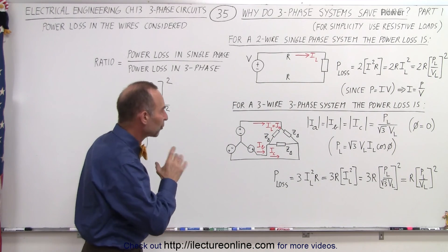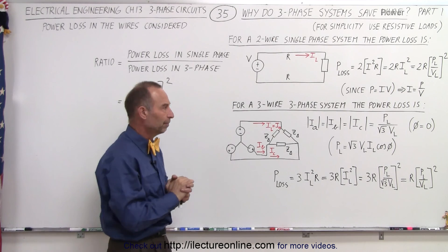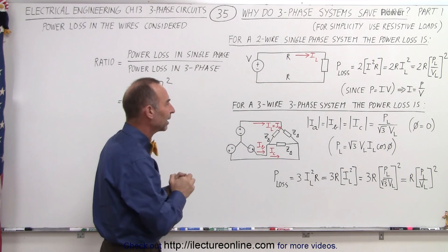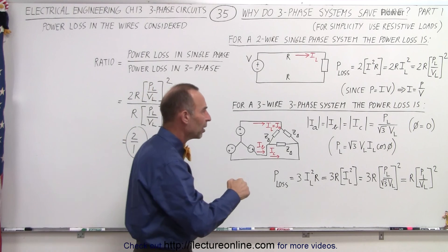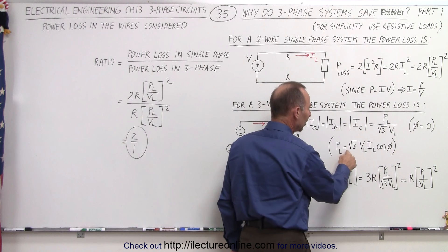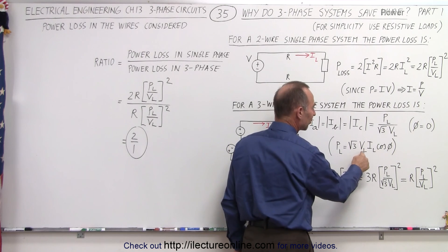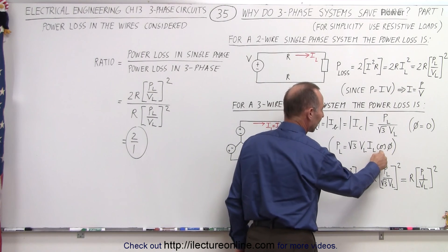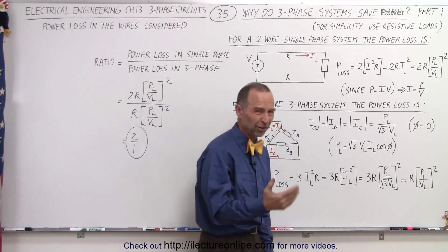Now, let's consider a three-wire, three-phase system. What is the power loss in that case? Well, we already saw on the previous video that the power per phase is equal to the square root of three times the line voltage times the line current times the cosine of the phase angle.